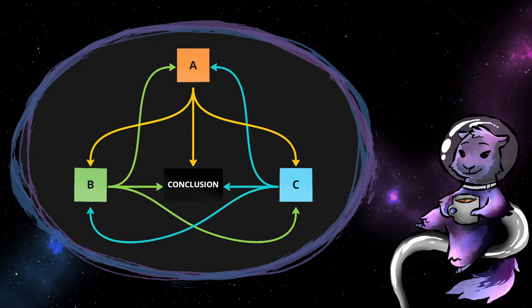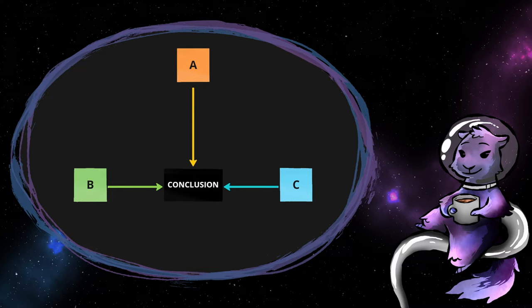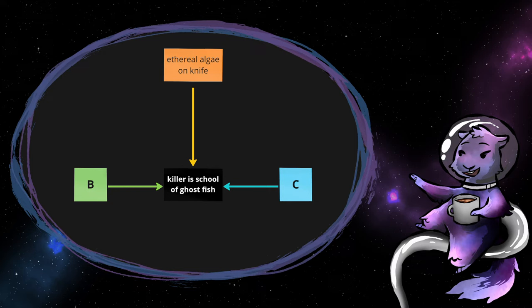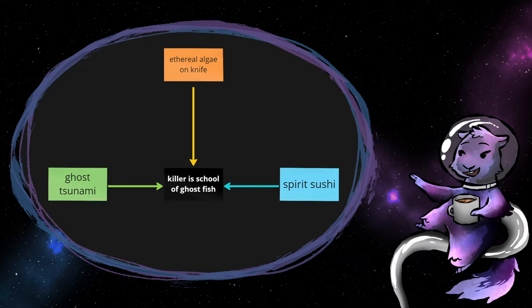Let's just make one. If I want the party to discover that the murderer is actually a school of ghostfish, I can come up with three random clues pretty easily. There's ethereal algae on the knife. The locals say a ghost tsunami washed over this part of town last night. The victim was planning to open a spirit sushi restaurant.